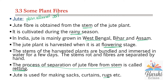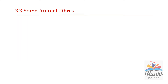One more plant fiber is coir, which is obtained from the outer covering of the coconut. Coir is used for making ropes, floor coverings, mattresses, pillows, etc.